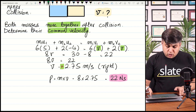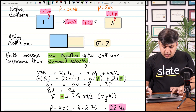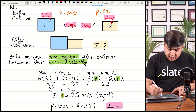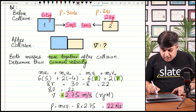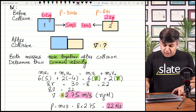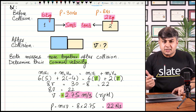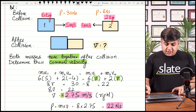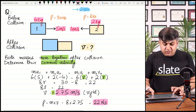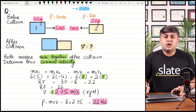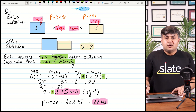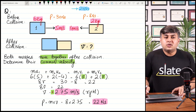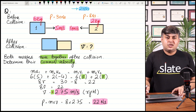The combined velocity of both masses after collision is 2.75 meters per second towards the right-hand side. This is how you apply the law of conservation of momentum to different situations and questions. That is it for today's video — looking forward to seeing you in the next video. Thank you.